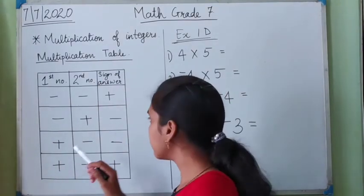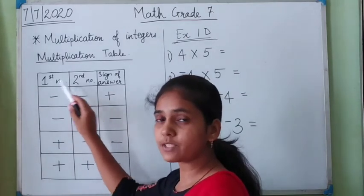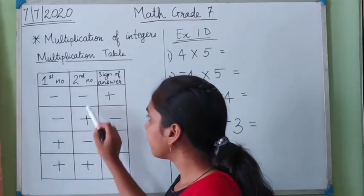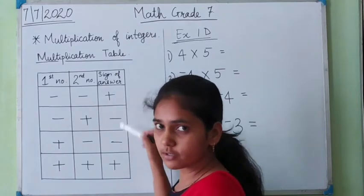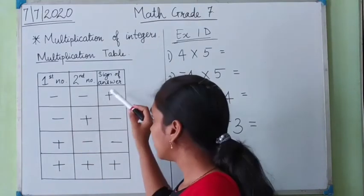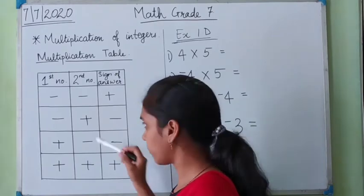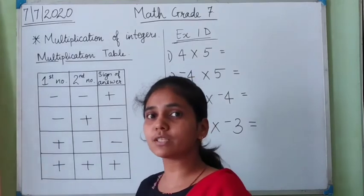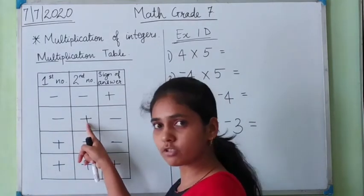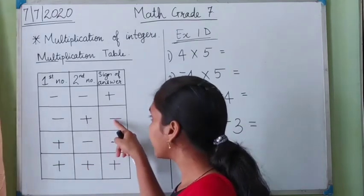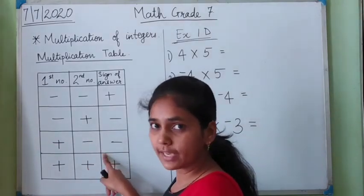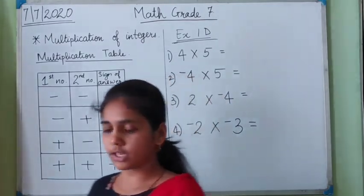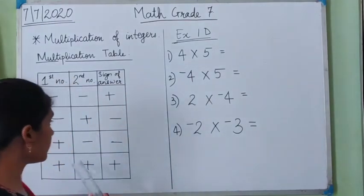One simple rule to remember: if both the numbers have the same signs — either both are negative or both are positive — then the answer will be positive. If both numbers have different signs, meaning one is negative and the other is positive, then the sign of the answer will be negative. This is the simple way to memorize this table. Now let's see some examples based on this table.